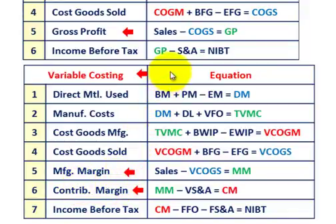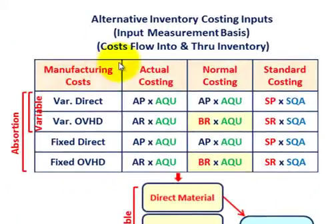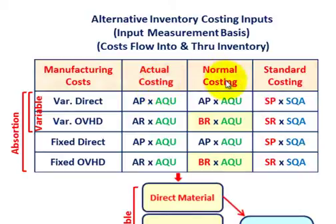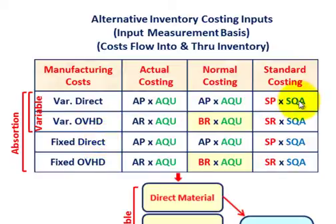That covers the income statement format. Now for the input measurement basis — the alternative inventory costing inputs. For manufacturing costs we have variable direct, variable overhead, fixed direct, and fixed overhead. There are three methods: actual costing, normal costing, and standard costing. For standard costing, you use a standard price or rate times a standard quantity allowed based on established standards.